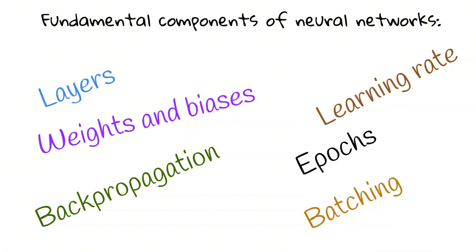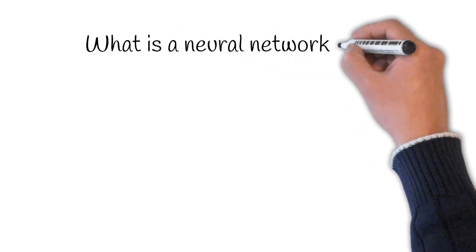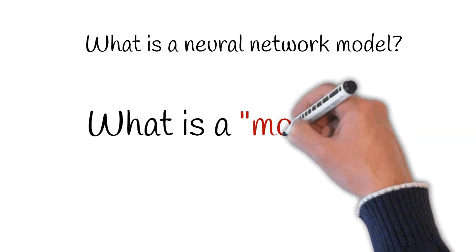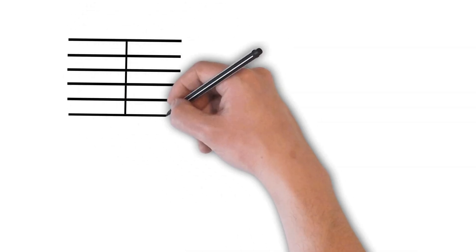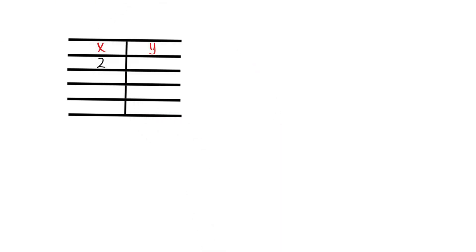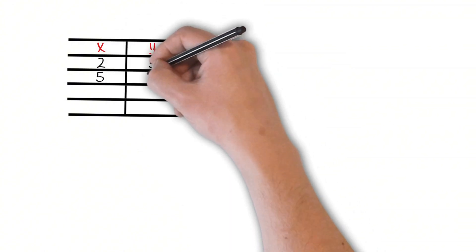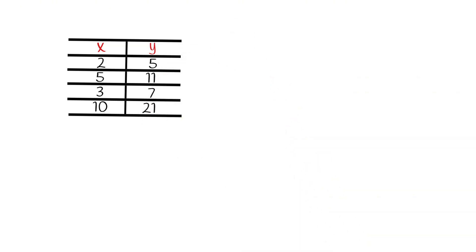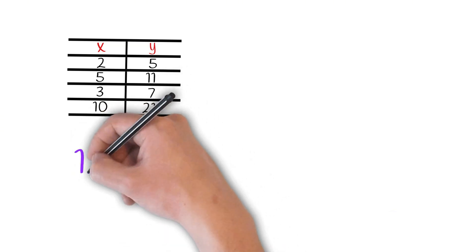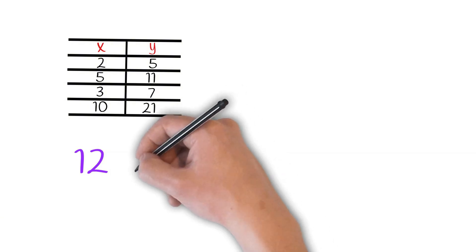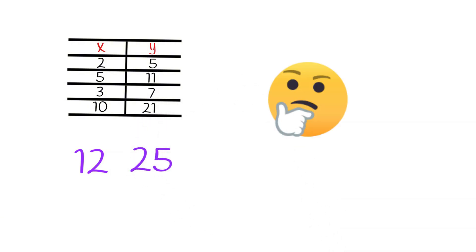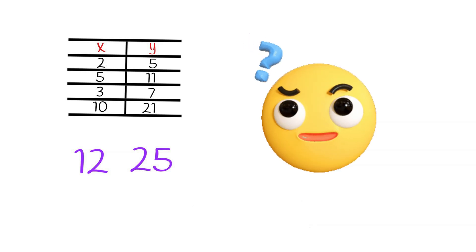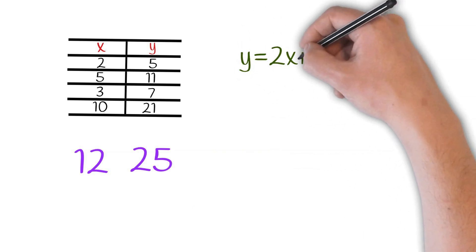Let us start. What is a neural network model? Before we go there, we have to know what the word 'model' refers to. Let's talk in terms of numbers. Let us say we have a table with two columns, x and y. When x is 2, y is 5; when x is 5, y is 11; when x is 3, y is 7; when x is 10, y is 21. Can you tell me the value of y when x is 12? Exactly — y is 25. Your brain was looking for patterns and observed that every time y was 2 times x plus 1.